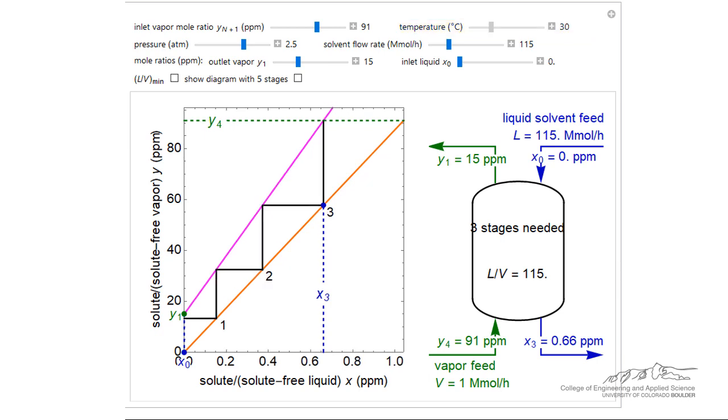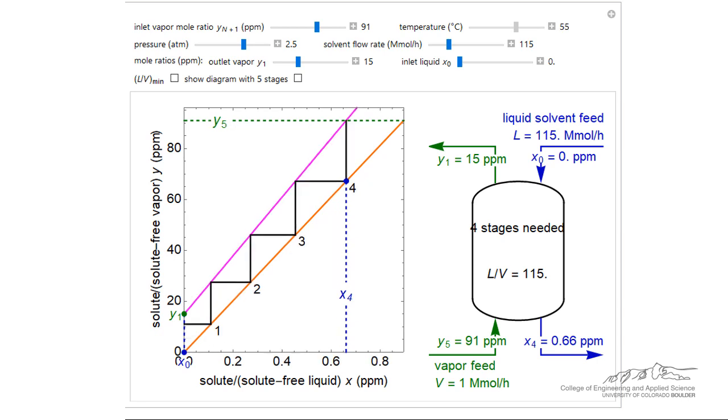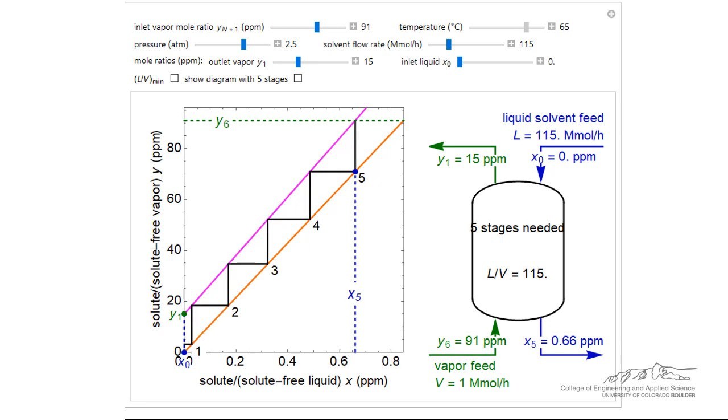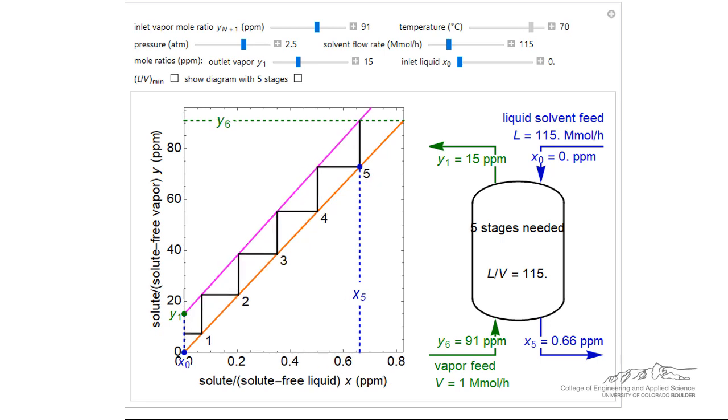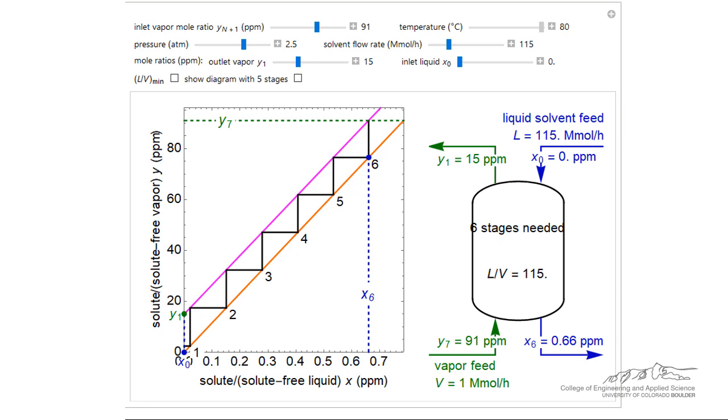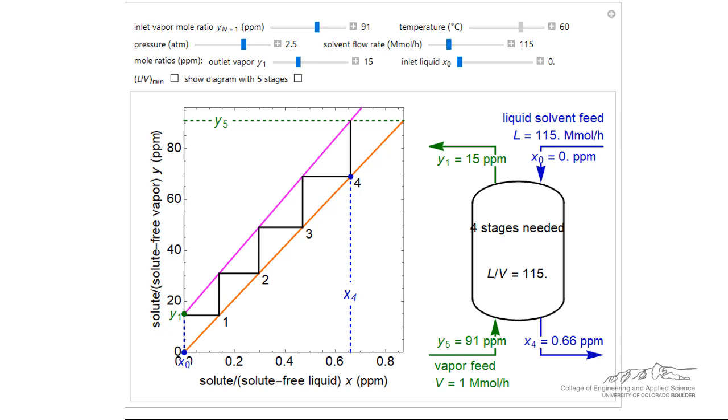H will increase as the temperature is increased, moving the equilibrium line closer to the operating line. This will require more stages to reduce the solute concentration from 91 to 15 ppm. Note that the outlet concentration of the liquid increases slightly as the temperature is increased. To reduce the number of stages for absorption, we would like to run the column at as low a temperature as possible.